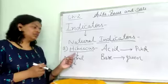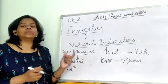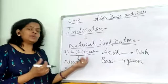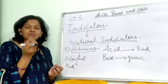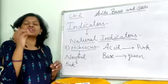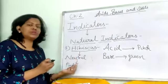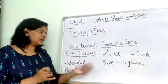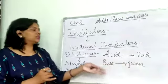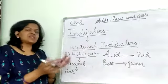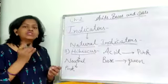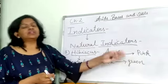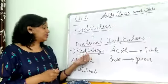The third natural indicator is hibiscus, which we call gudhal in Hindi. Hibiscus rosa-sinensis — we also use it for dissection in biology. We use the extract from the hibiscus flower as an indicator. Its neutral color is pink. In acid it remains pink, but in base it changes to green.